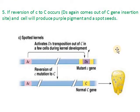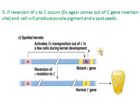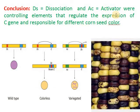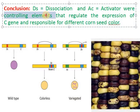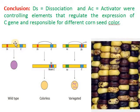The DS element, in the presence of AC elements, will be removed from the C gene. When that happens, the mutant C gene is restored and expressed normally. DS means dissociation and AC means activator. These are controlling elements that regulate the expression of the C gene.